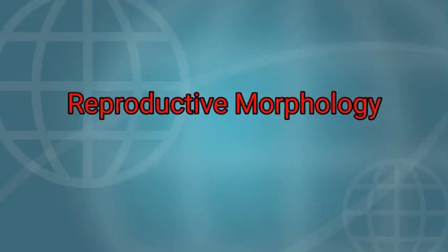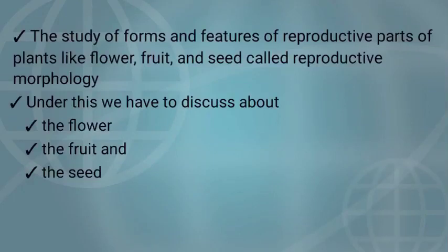Hi everyone. Up to the previous video we completed vegetative morphology. Now we are going to discuss about reproductive morphology. The study of forms and features of reproductive parts of plants like flower, fruit and seed is called reproductive morphology. Under reproductive morphology we have to discuss about the flower, the fruit and the seed.